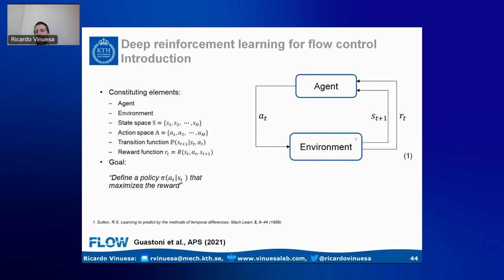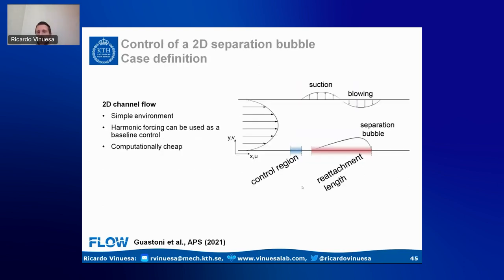The reward is a measure of the quality of the actions — for drag reduction, the reward is minus the drag. We use PPO and try to learn a policy such that, given the state of the system, we obtain the optimal action to maximize reward in the long term. We apply this to a 2D channel with a boundary condition at the top — through suction and blowing we introduce a separation bubble — and want to control this bubble upstream through blowing and suction.